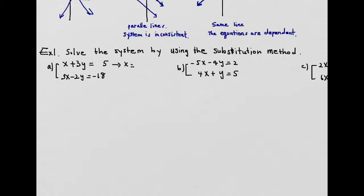Rewriting the first equation gives x equals 5 minus 3y. Once you solve for one variable, you can replace it into the other equation. So substituting x = 5 − 3y into the second equation, instead of x you write 5 minus 3y, giving you an equation with only one variable: (5 − 3y) − 2y = −18. Now you should be able to solve for y.